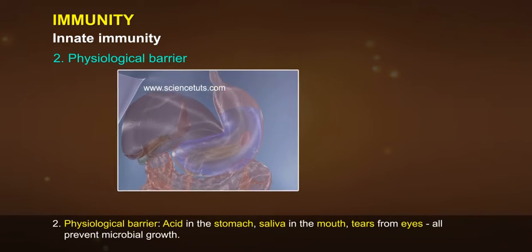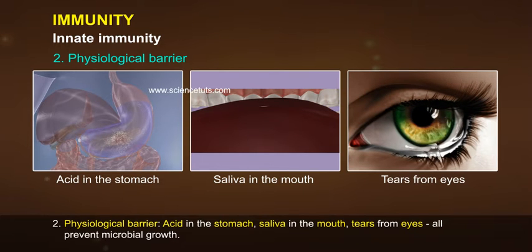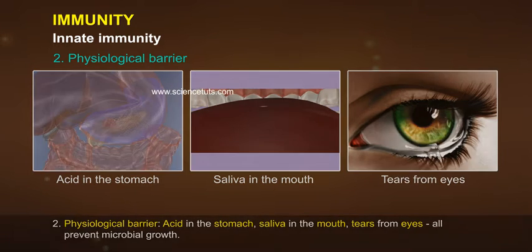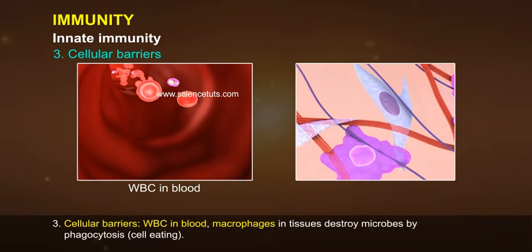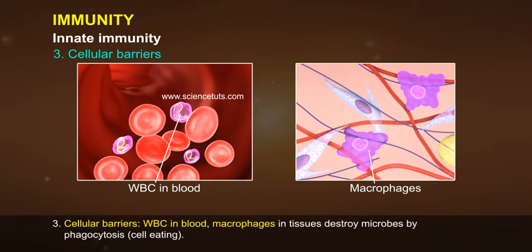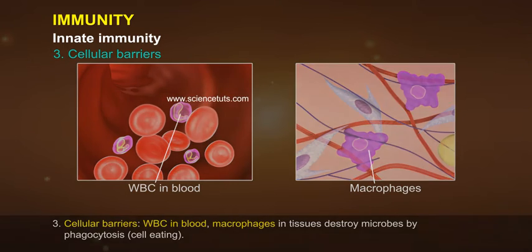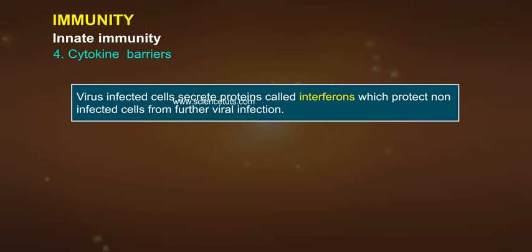2. Physiological barriers: Acid in the stomach, saliva in the mouth, and tears from the eyes all prevent microbial growth. 3. Cellular barriers: WBCs in blood and macrophages in tissues destroy microbes by phagocytosis (cell eating). 4. Cytokine barriers: Virus-infected cells secrete proteins called interferons, which protect non-infected cells from further viral infection.